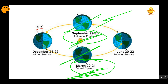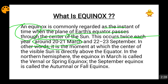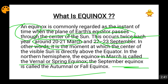For Equinox, this is the set standard. The definition says it is commonly regarded as the instant of time when the plane of the Earth's equator passes through the center of the Sun, and this occurs twice — around March 20–21 and September 22–23. In March it is known as Vernal or Spring Equinox; in September it is known as Autumnal or Fall Equinox.